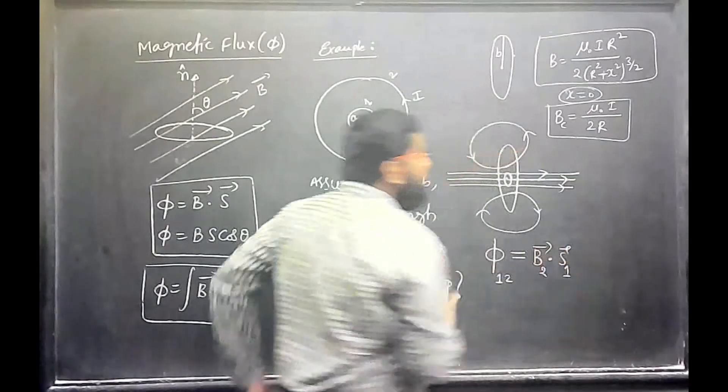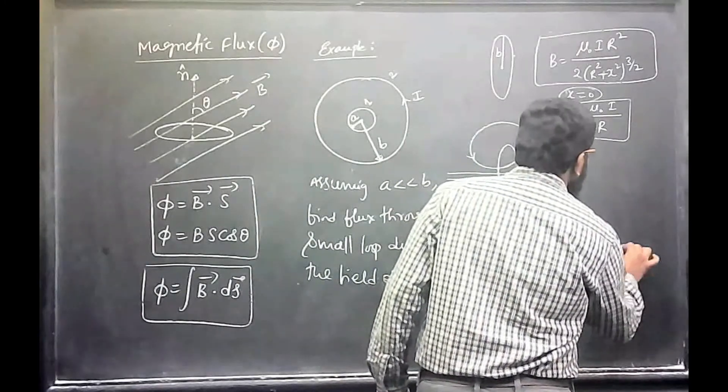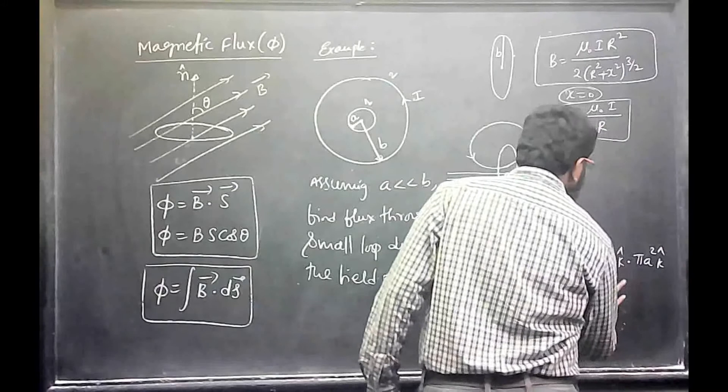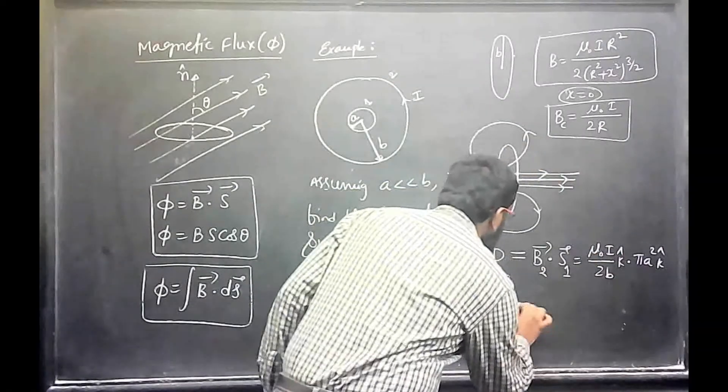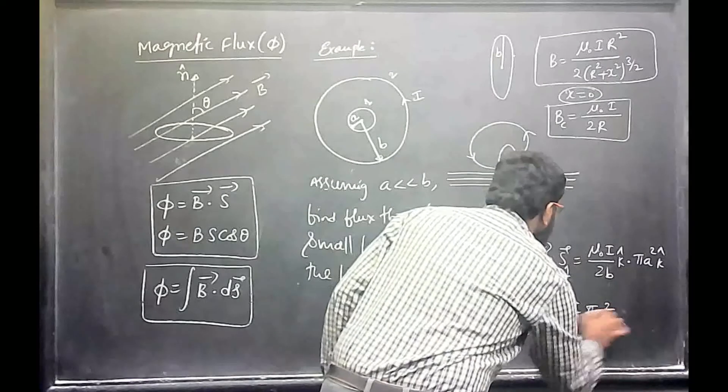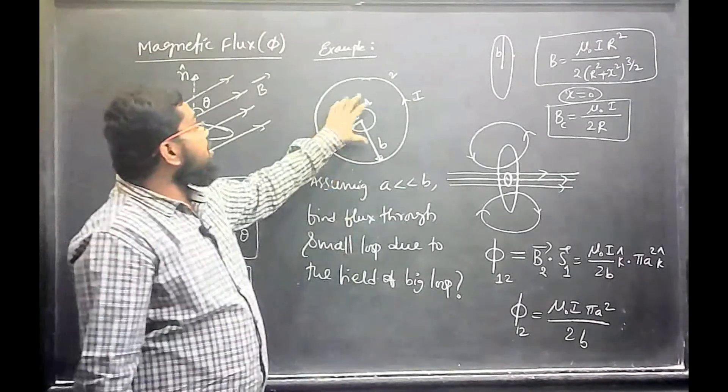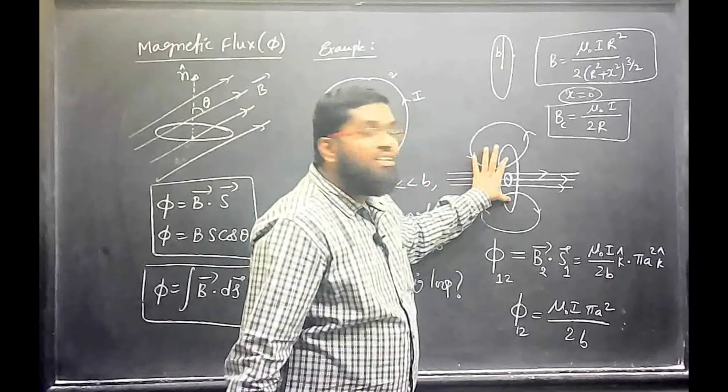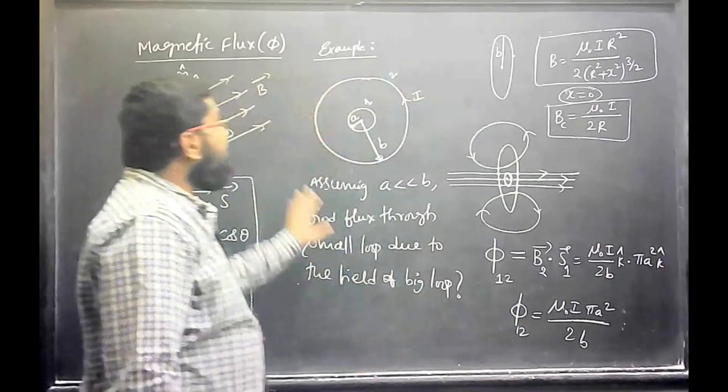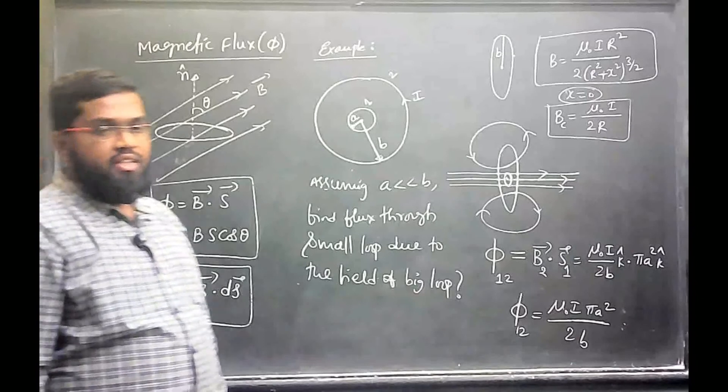So, magnetic flux due to 1 will be B2 dot S1. B2 will be mu naught I by 2R. It is along k cap towards you. Then area pi a square, that is also towards you. Then radius is B. So, flux through 1 due to 2 will be k dot k equals 1. So, mu naught I pi a square by 2B. That is the flux passing through this. This is the uniform case. So, this is the way of finding the flux.